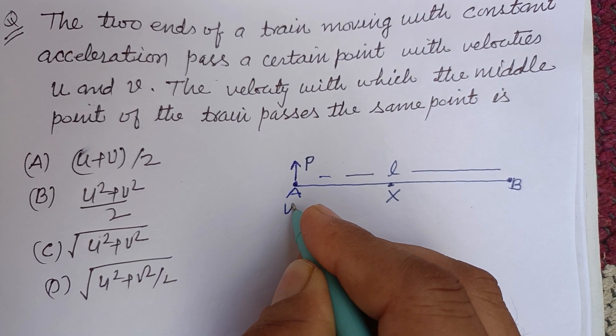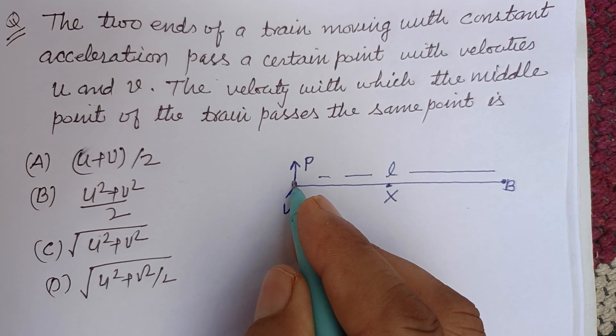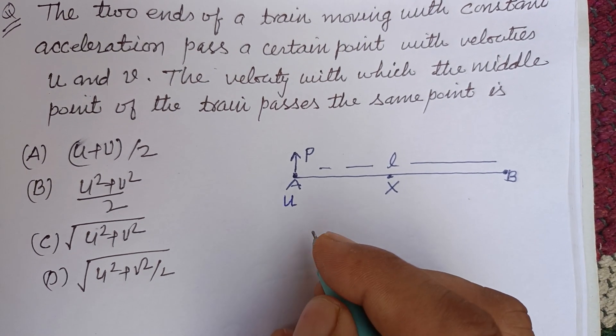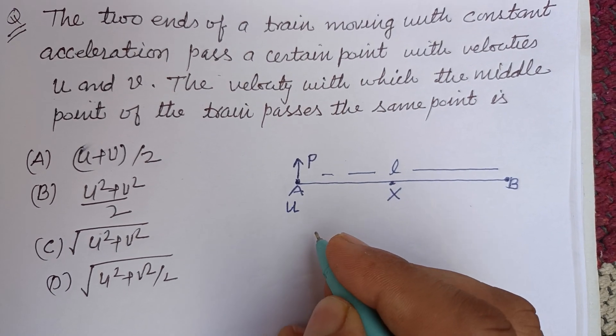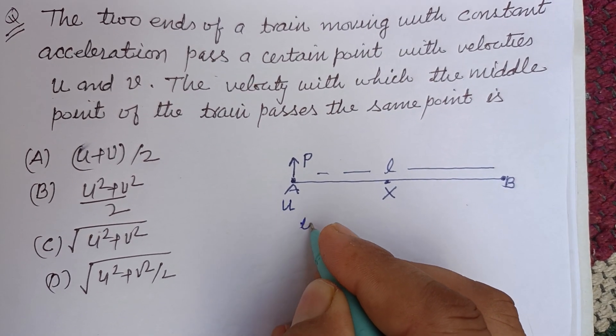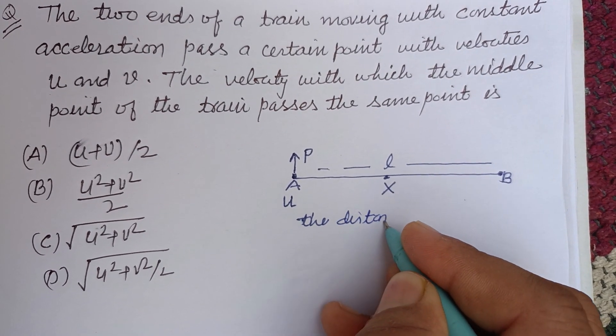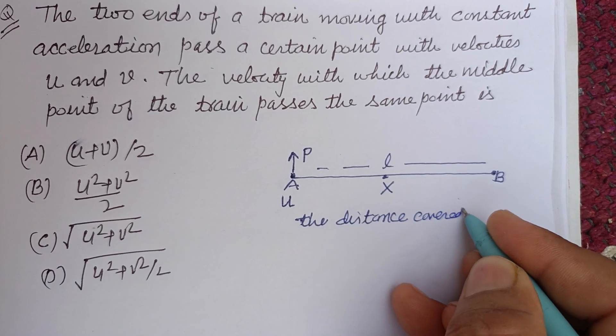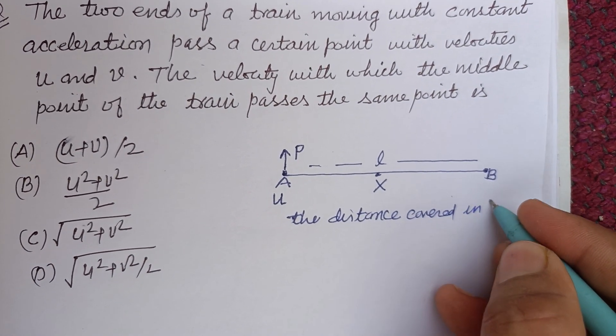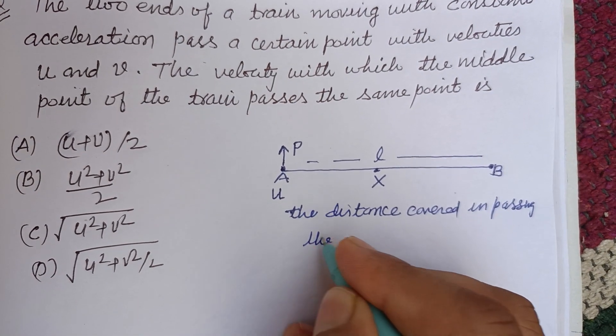It is moving with, passing this point with velocity u, and the end point passes this point with velocity v. So the distance covered in passing the point equals L.